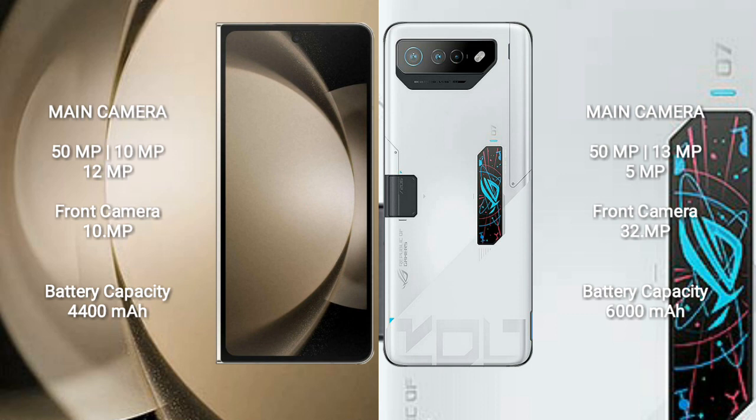The Asus ROG Phone 7 Ultimate also features a triple rear camera setup: 50MP plus 13MP plus 5MP. The front camera is 32MP.